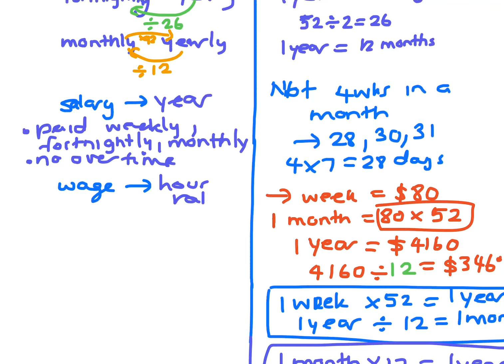Whereas a wage has an hourly rate. You have a fixed number of hours each week. And then you do get paid overtime if you work extra hours.